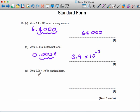Final part of the question: 0.25 times 10 to the 7, write that number in standard form. The reason it isn't in standard form is this first number is not between 1 and 10.